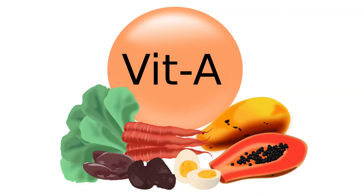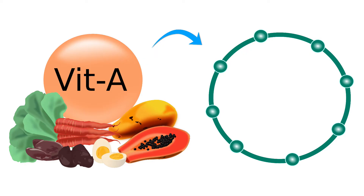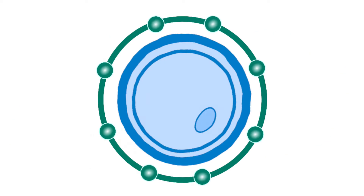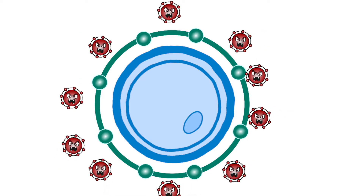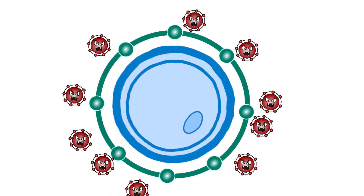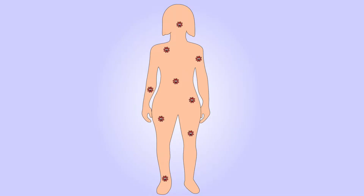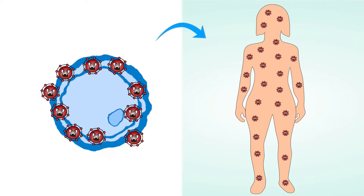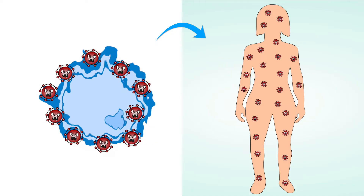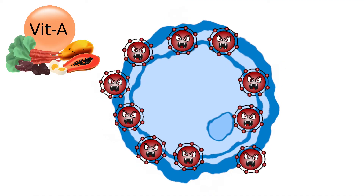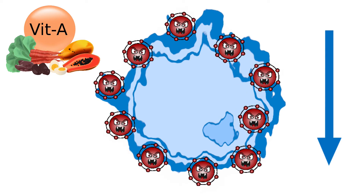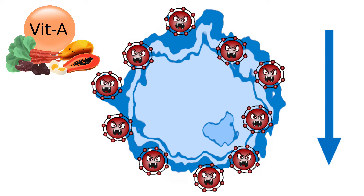Vitamin A acts as an antioxidant as well. Antioxidants protect our cells from damage by free radicals. Free radicals are naturally produced in the body, and they become harmful when they are excessive. Hence, vitamin A reduces the damage caused by free radicals.